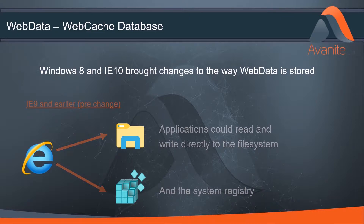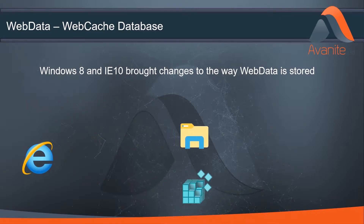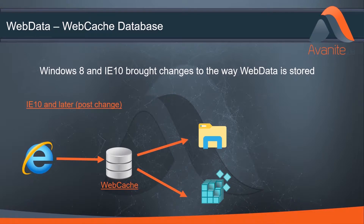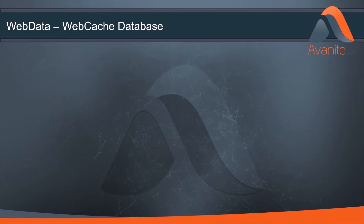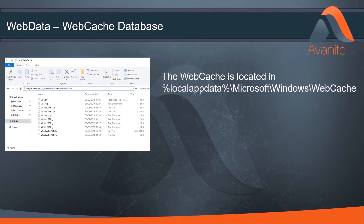With the release of Windows 8, and in an effort to speed up web browsing, Microsoft changed the underlying WinInet subsystem responsible for internet communications. This introduced a new database known as the WebCache as its central point of storage for all web data. The WebCache itself is named webcachev01.dat and can be found in the local app data section of the user profile.